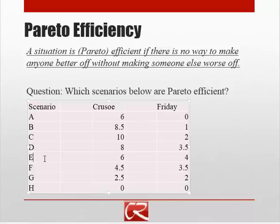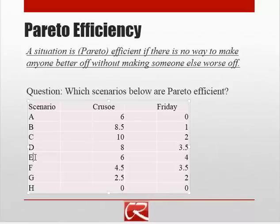What about if we start at E? Moving to D makes Crusoe better off but hurts Friday. So starting at E, E is also efficient. F, G, and H are all inefficient. So we have the situation that C, D, and E are all efficient.